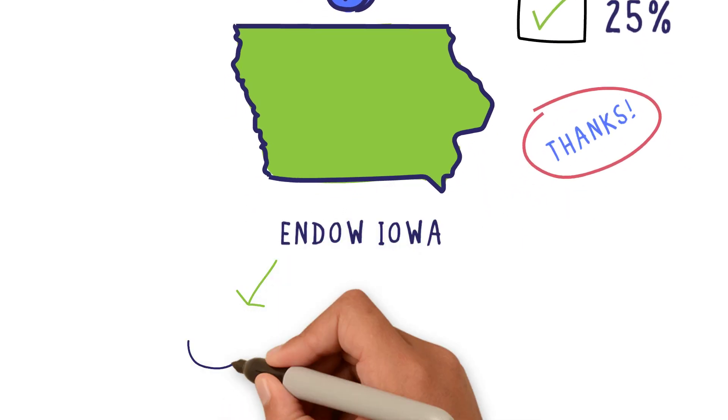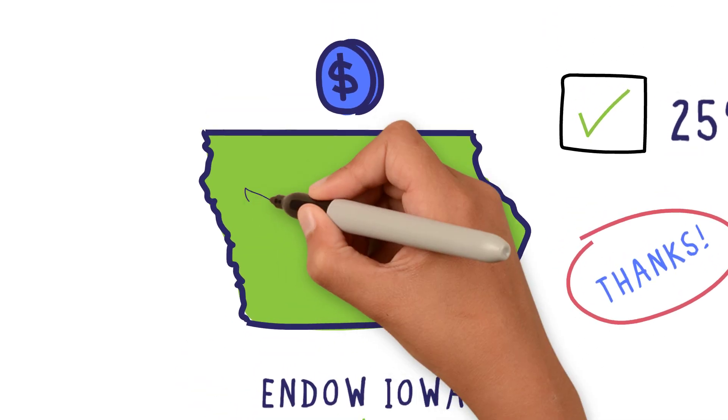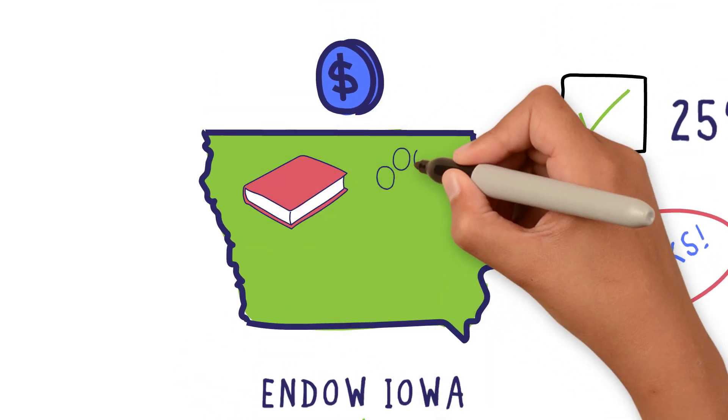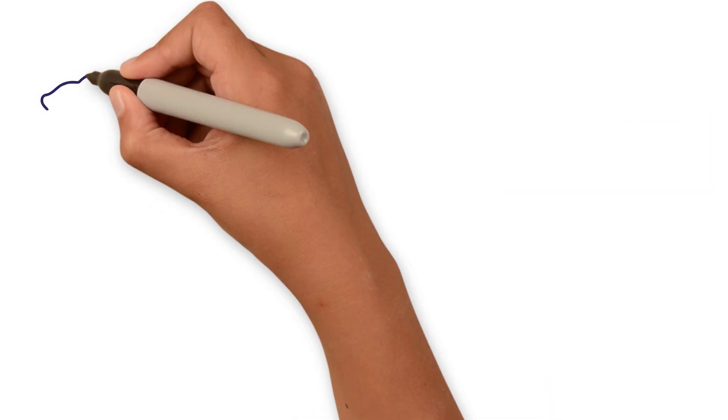An Endow Iowa fund can also be established by individuals, families, or businesses to ensure the Iowa nonprofits and communities you care about have the right ingredients to be successful now and for years to come.